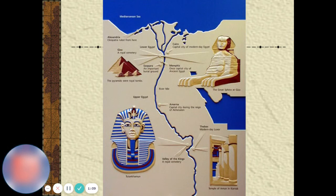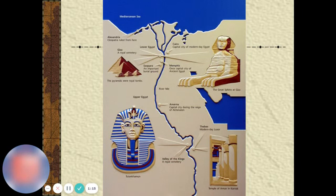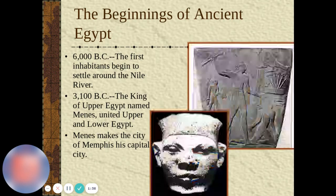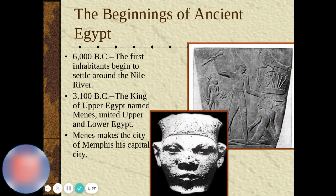This is what ancient Egypt looks like nowadays. It's got a lot of monuments and stuff. You'll have to compare it to the map I'll show you in a couple more slides. Around 6,000 BC we see the first inhabitants begin to settle around the Nile River.